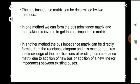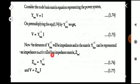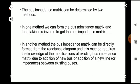Like the admittance matrix, the bus impedance matrix is also symmetrical around the principal diagonal. The bus impedance matrix can be determined by two methods. In the first method, we form the admittance matrix and take its inverse to get the bus impedance matrix, as we have seen.